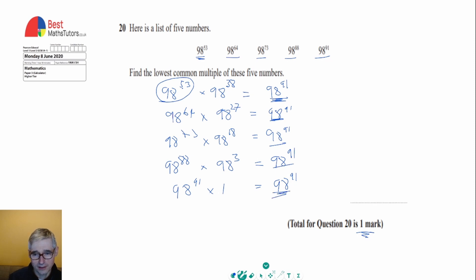That means the lowest common multiple of these numbers is actually 98 to the power 91.